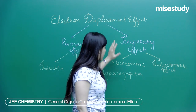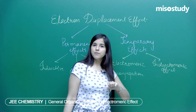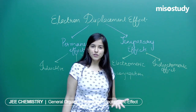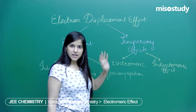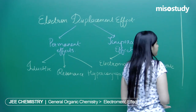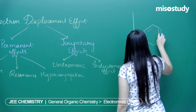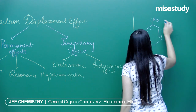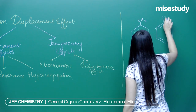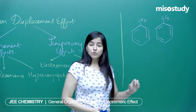Temporary effects are different — the molecule itself does not have these effects, but whenever a condition is provided, this effect gets generated. Before moving on to the electromeric effect, here is a question related to hyperconjugation. I have two structures: one has an alkyl group attached, and the other has a CF3 group.